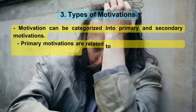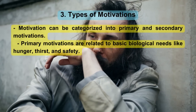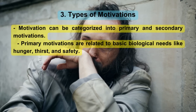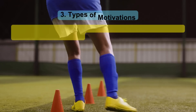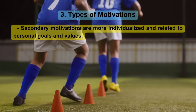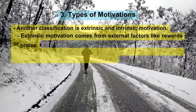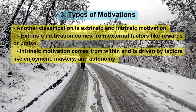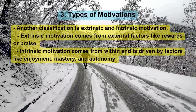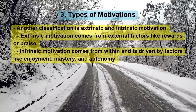Types of Motivations. Motivation can be categorized into primary and secondary motivations. Primary motivations are related to basic biological needs like hunger, thirst, and safety. Secondary motivations are more individualized and related to personal goals and values. Another classification is extrinsic and intrinsic motivation. Extrinsic motivation comes from external factors like rewards or praise. Intrinsic motivation comes from within and is driven by factors like enjoyment, mastery, and autonomy.